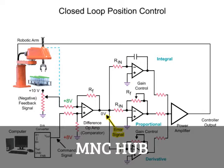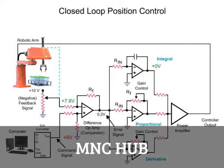With an error signal of zero, the output voltage of the integral amplifier is zero. The integral amplifier increases gain depending on the duration of the error signal — the longer the error is present, the larger the amplifier gain. The output of the integral amplifier increases and is further amplified by the power amp to overcome the friction and mass of the robotic arm and complete the final move to the desired position. The feedback signal is now equal to the command signal, output voltages of the amplifiers are zero, and the robotic arm motor stops turning.